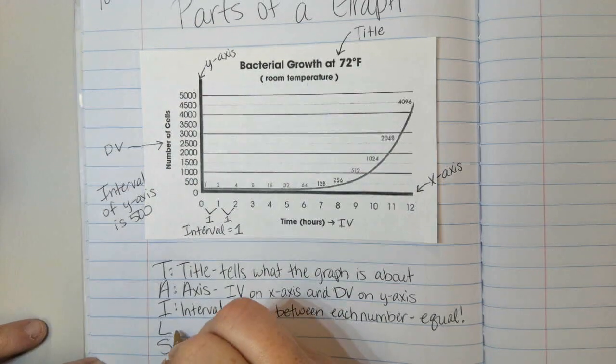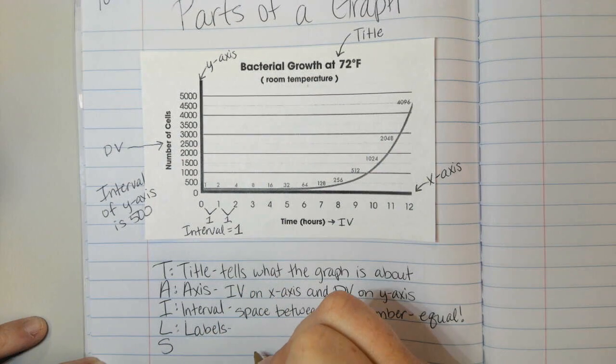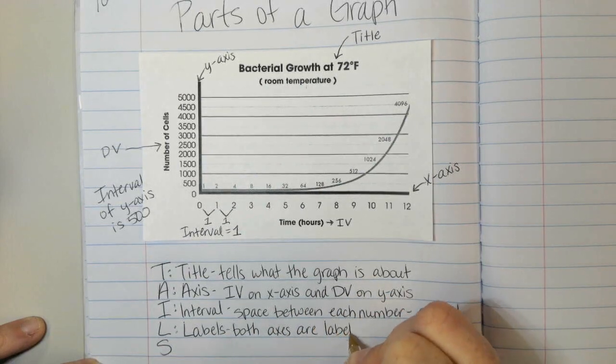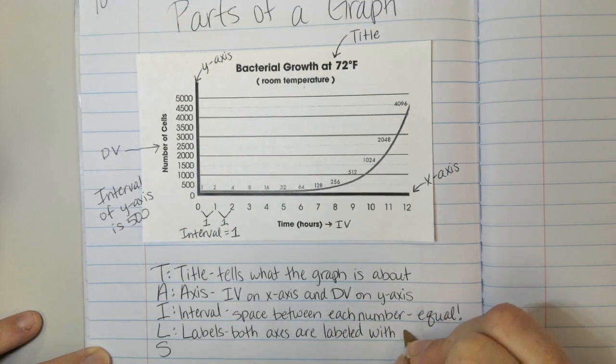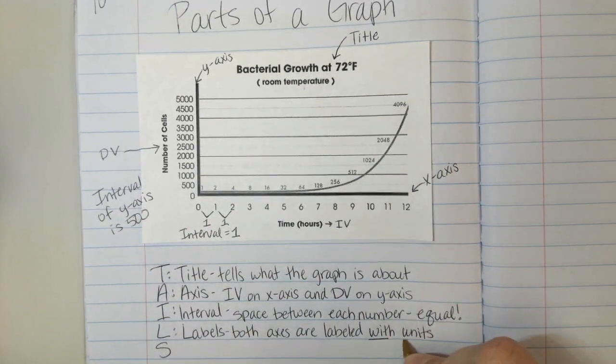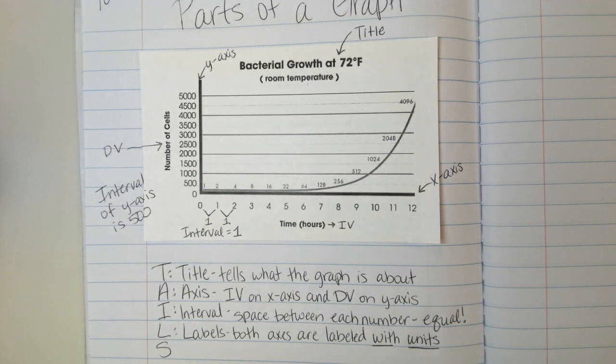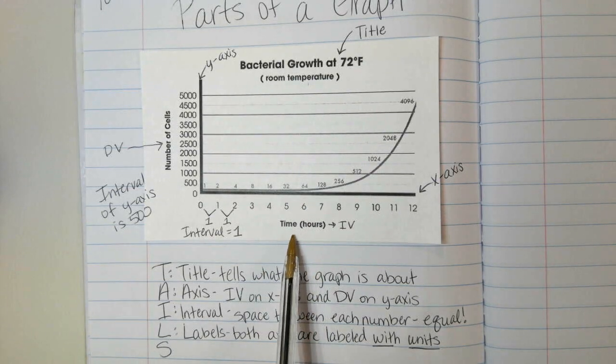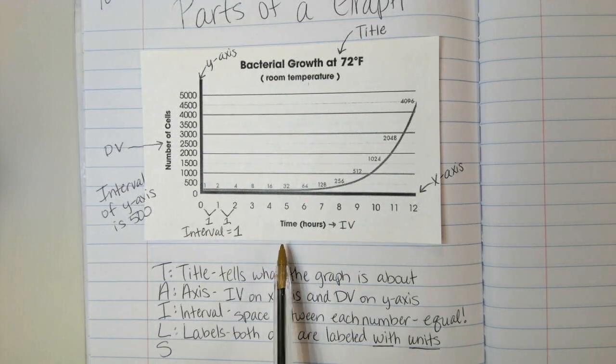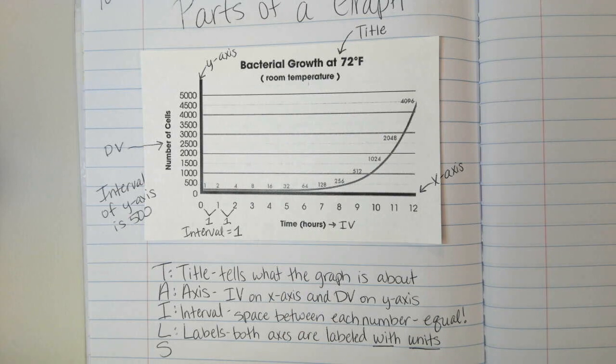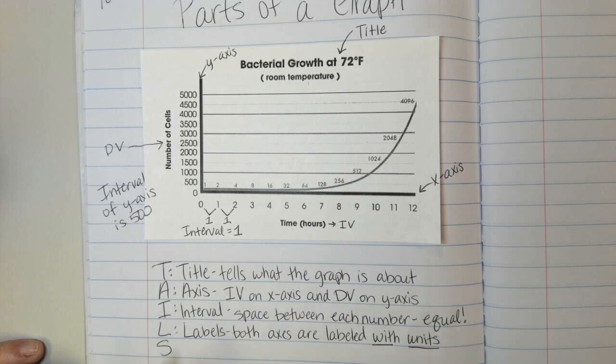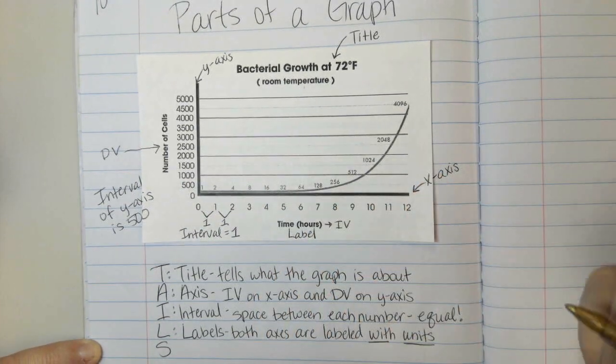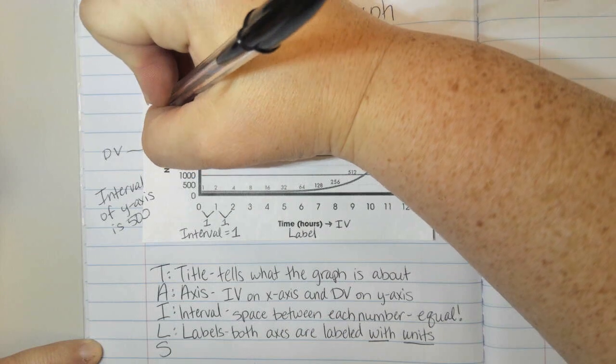L stands for labels. We need to make sure that both axes are labeled with units. Axes is the plural way to say axis. We don't say axis's, we say axes. So we need to make sure that both of the axes are labeled. What is it that we were measuring? What is the variable? And most importantly, what is the unit? Right here we have time. Time can be in seconds, minutes, hours, days, weeks, years. So we need to be sure that we know exactly what we're talking about. So this is considered the label right here, and then this is considered the label on the Y axis.